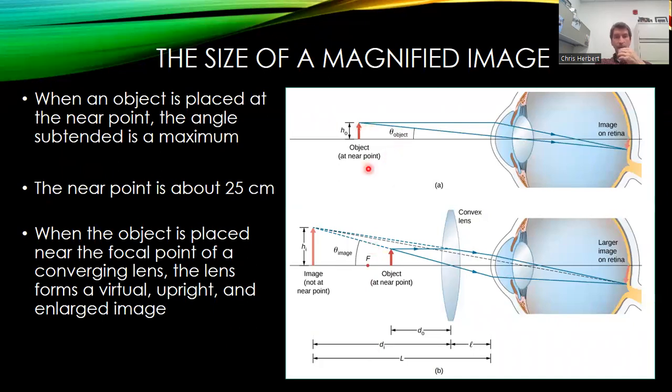So once again, the object is sitting right here. If I place an object at the near point of the eye, it's going to subtend the greatest angle. So anything sitting at the near point of the eye is going to be the closest thing that I can focus on.